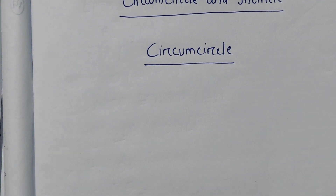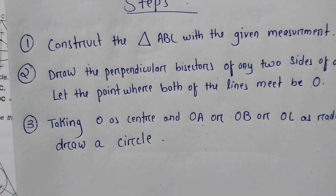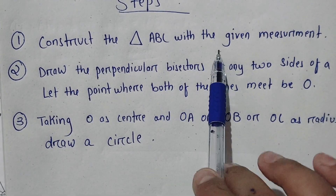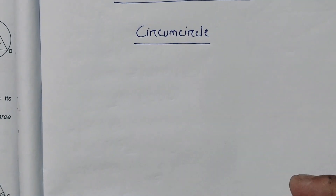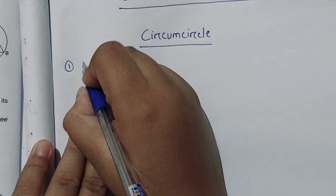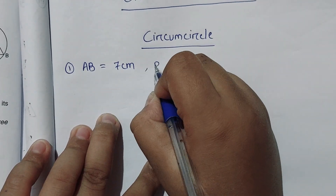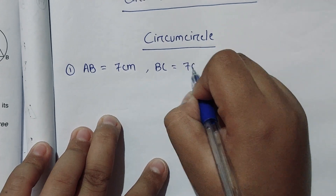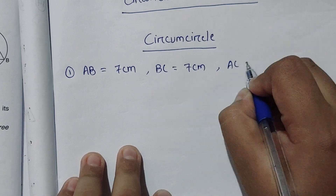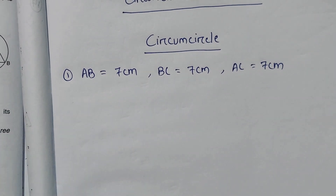The first rule is: construct the triangle ABC with the given measurement. We don't have any specific measurement given, so we will draw an equilateral triangle. Let the measurement be AB = 7 cm, BC = 7 cm, and AC = 7 cm.